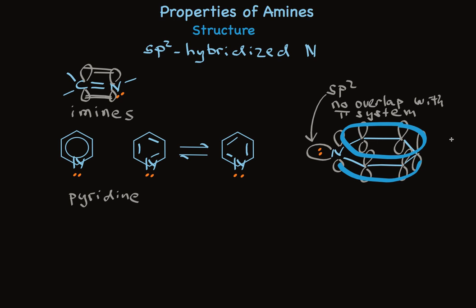Another really important example is pyrrole. It is an aromatic compound, and unlike pyridine, the unshared pair of electrons on nitrogen participates in the aromatic ring. Unlike pyridine's lone pair, which is available to act as a base, pyrrole's unshared pair is not, because if it acts as a base or nucleophile, the aromatic ring would have to be disrupted.